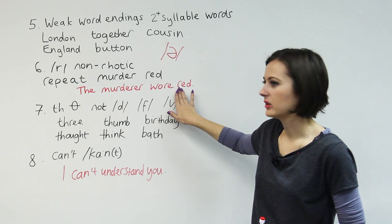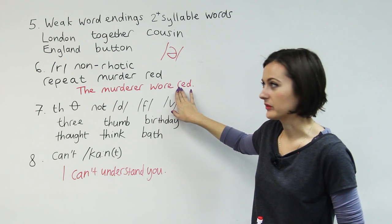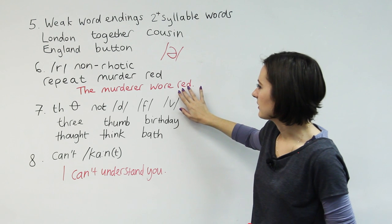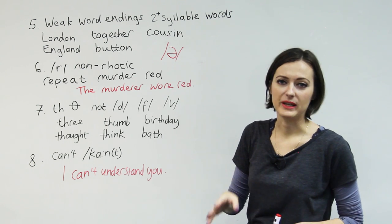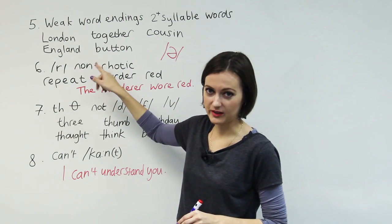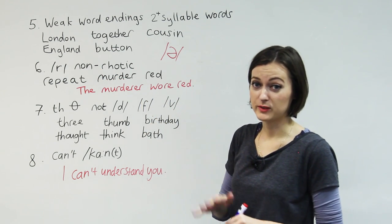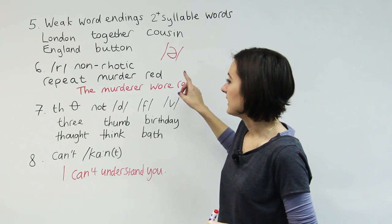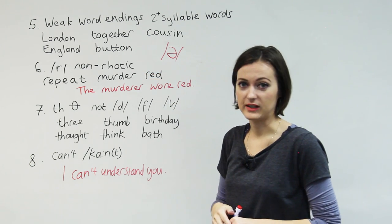But in my accent, I would say the murderer wore red. So we don't roll our tongues. And that's something... If you want to speak standard British English, you could work on that R if you do it. So if you're Arabic or if you're Spanish, Italian as well, you could work on that sound.